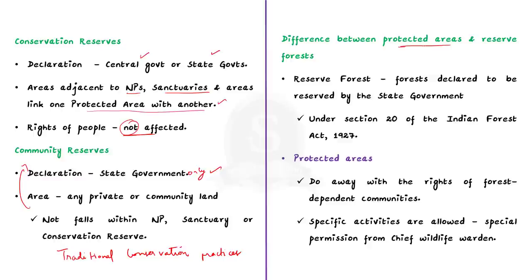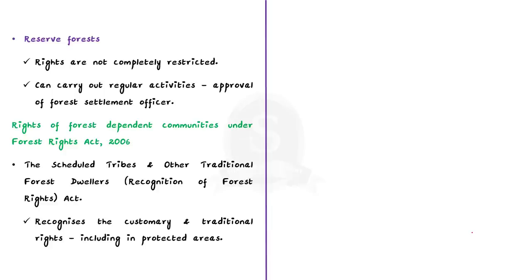Now let's see the difference between protected areas and reserve forest. Reserve forest means forest declared by the state government under Section 20 of the Indian Forest Act 1927. The major difference lies in the rights of forest dependent communities. Protected areas do away with the rights of forest dependent communities residing on forest land; specific activities are allowed but communities need special permission from higher officials like the chief wildlife warden. In the case of reserve forests, the rights of forest dependent communities are not completely restricted — they can carry out regular activities with the approval of a local level forest settlement officer. In India, protected areas such as national parks and wildlife sanctuaries enjoy considerably a higher degree of security compared to reserve forests.